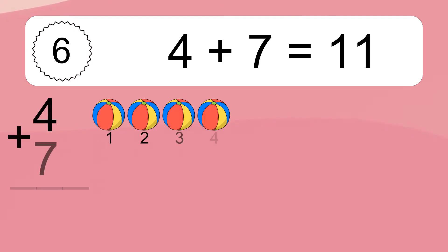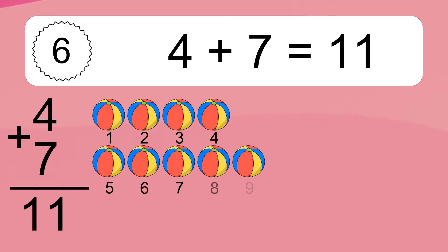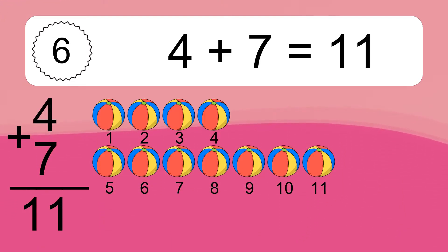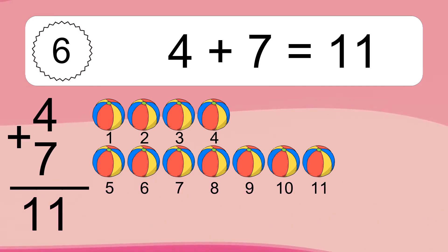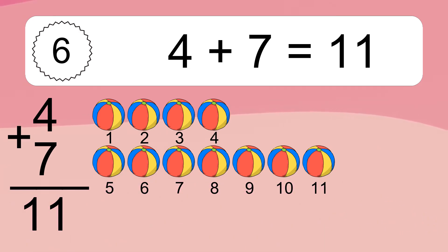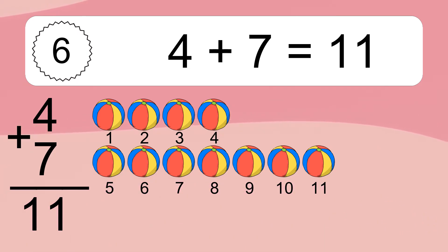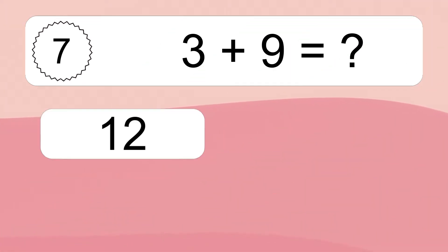4 plus 7 equals what? 4 plus 7 equals 11. Let's count it: 1, 2, 3, 4, 5, 6, 7, 8, 9, 10, 11.